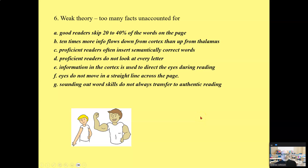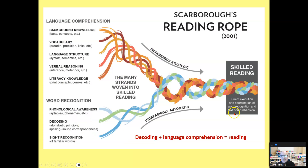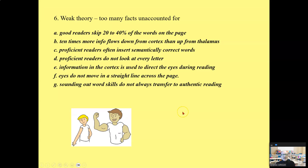It's a weak theory — the simple view of reading. There are simply too many facts unaccounted for. Good readers skip 20 to 40 percent of the words on the page. Ten times more information is flowing from the cortex down than from the thalamus up. Proficient readers often insert semantically correct words, don't look at every letter, and sounding out word skills do not always transfer to authentic reading situations.